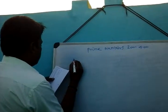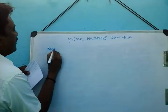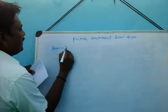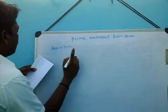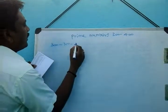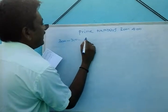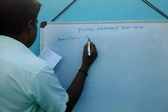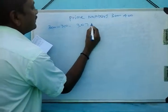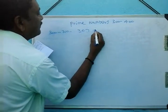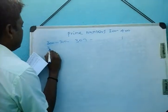First, between 300 to 310, there is only one prime number, and that is 307.